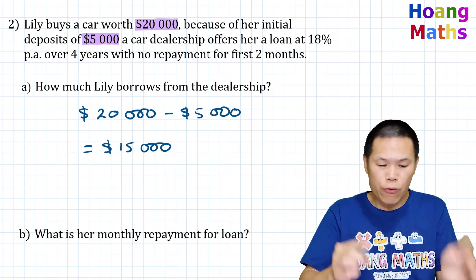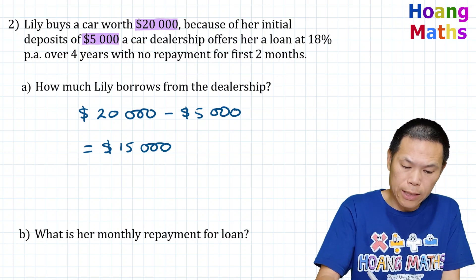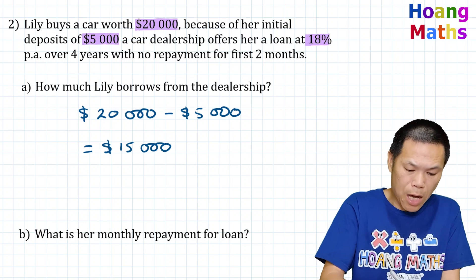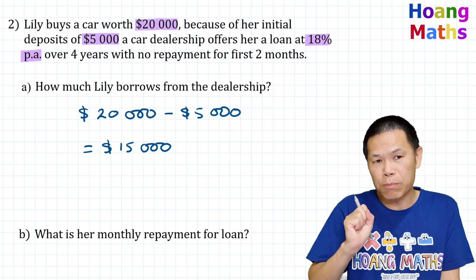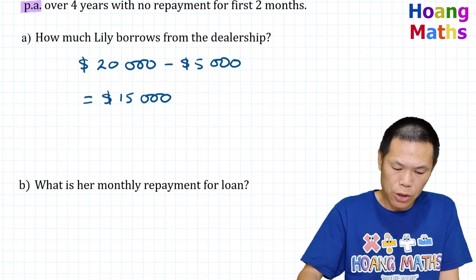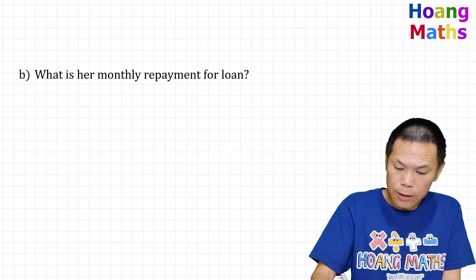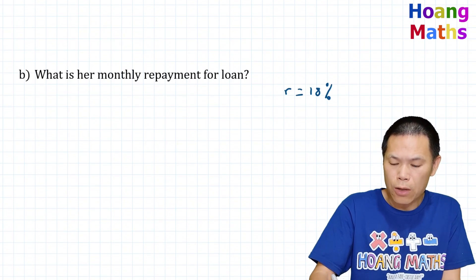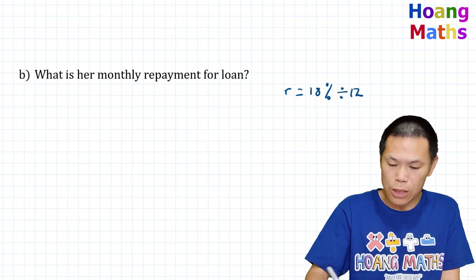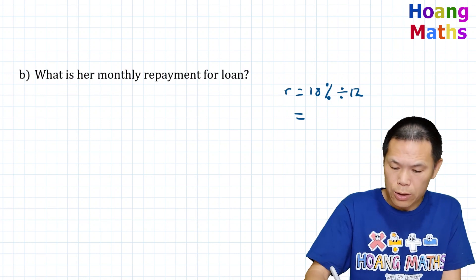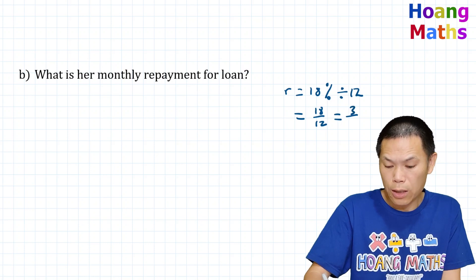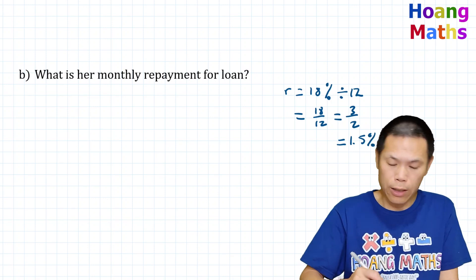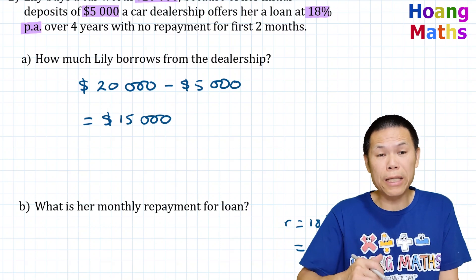For Part B we need to work out the monthly repayment. The interest rate is 18% per annum, but because she makes monthly repayments we need to divide 18 by 12. So r = 18% per year divided by 12 months gives us 1.5% per month.